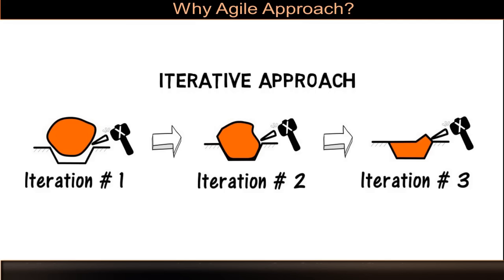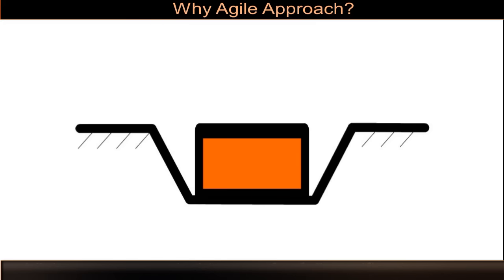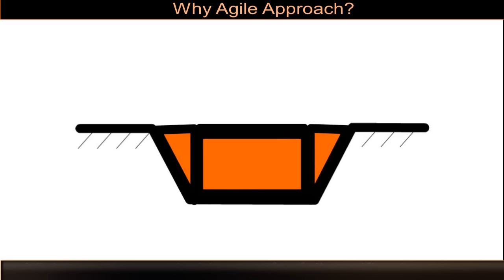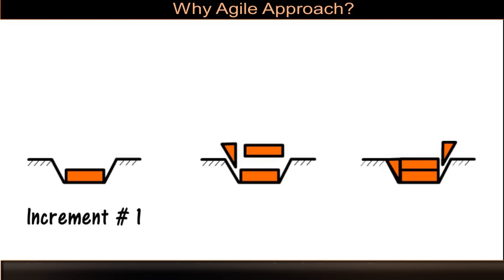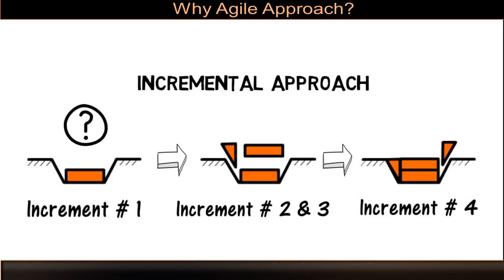Now, let us solve this complex problem in yet another way. You create a square block and deliver it to the customer. The customer places the square block in the pothole and gives you feedback. You create more incremental blocks based on the feedback and fill the pothole. If I name these blocks as increments, then this is called the incremental approach. Here, the customer does not have to wait till the end of the project — the customer can start using the increments and give feedback towards the completion of the project. Therefore, even though you didn't know the dimensions to start with, you could fill the gap with the incremental approach.